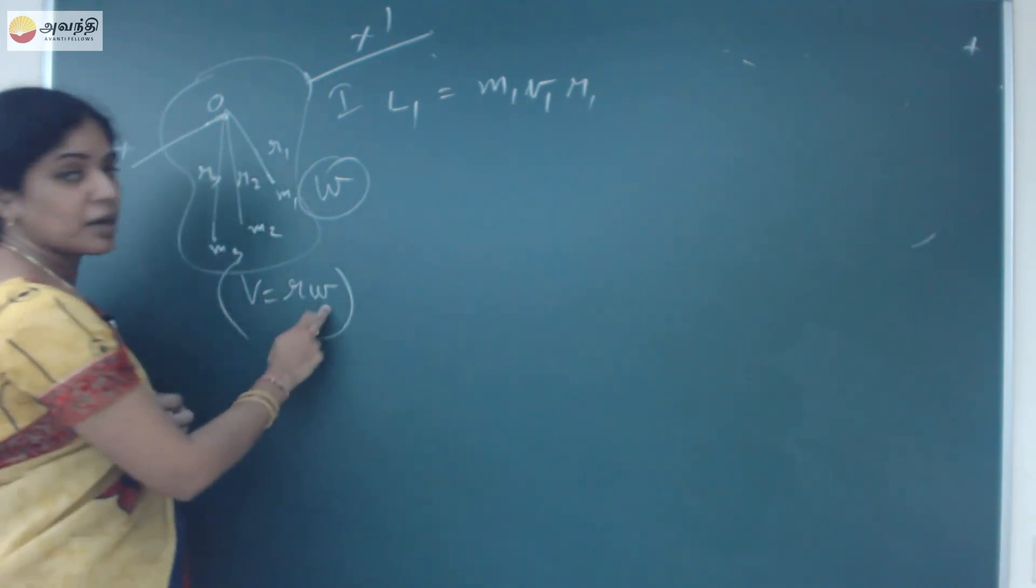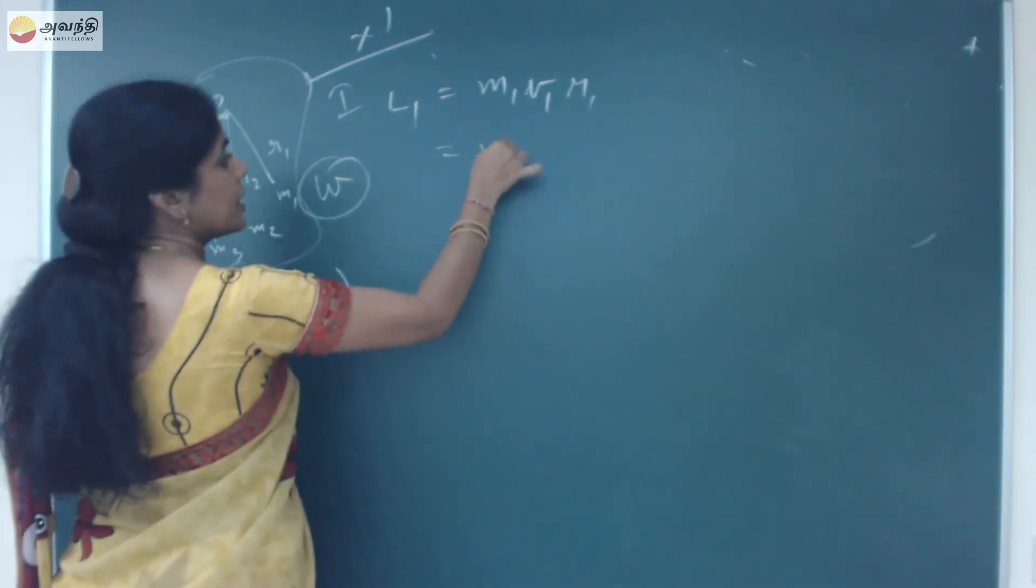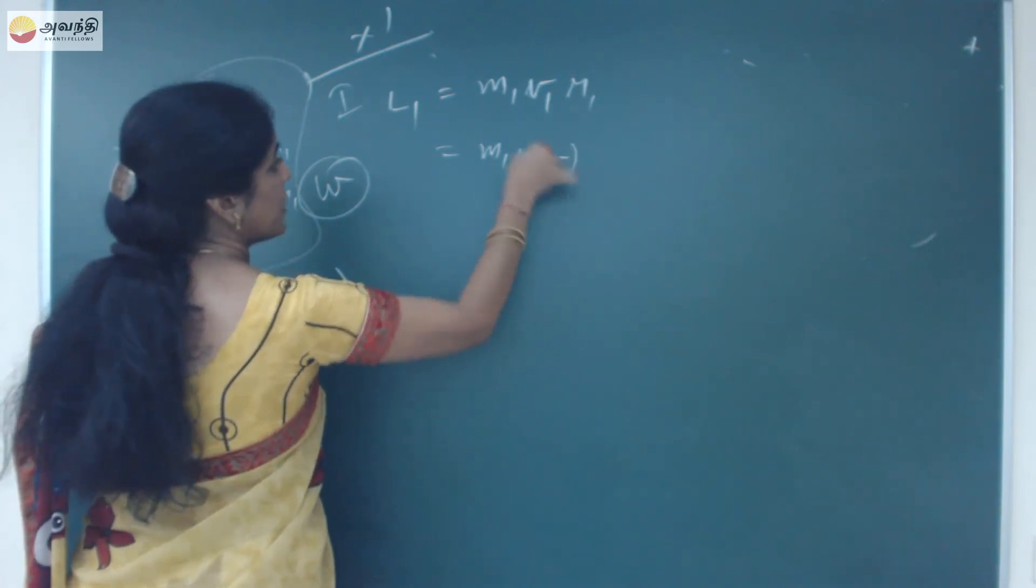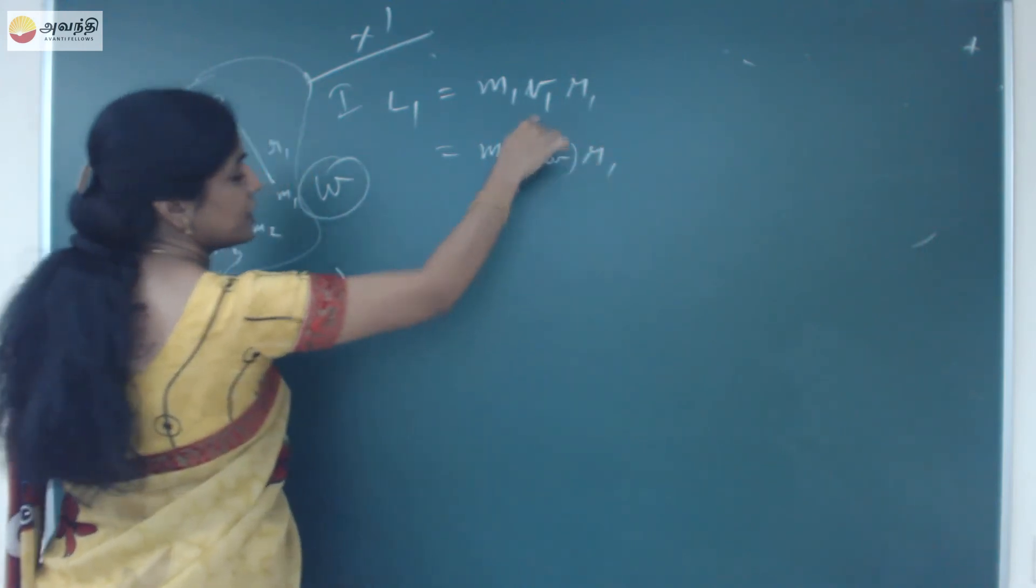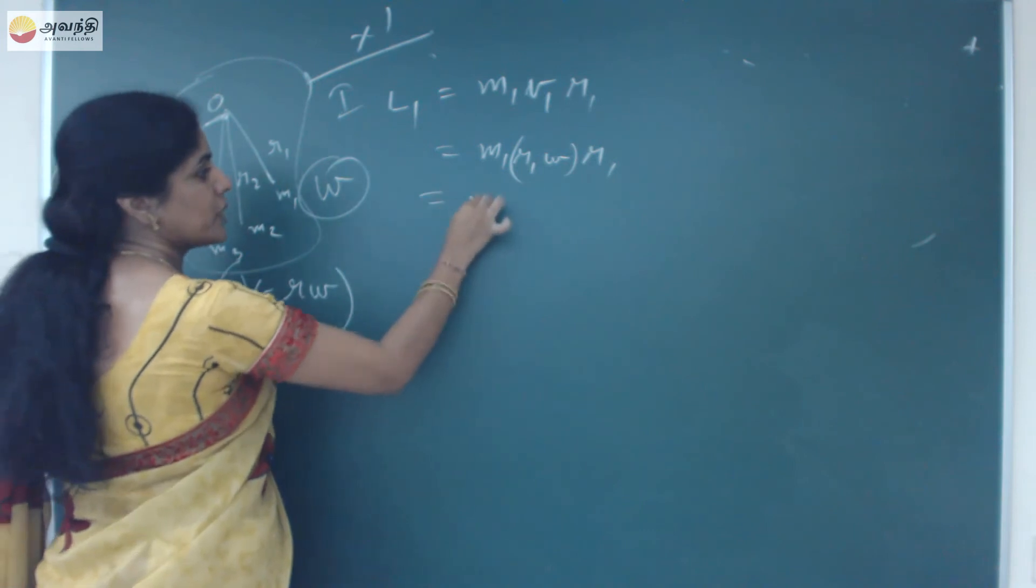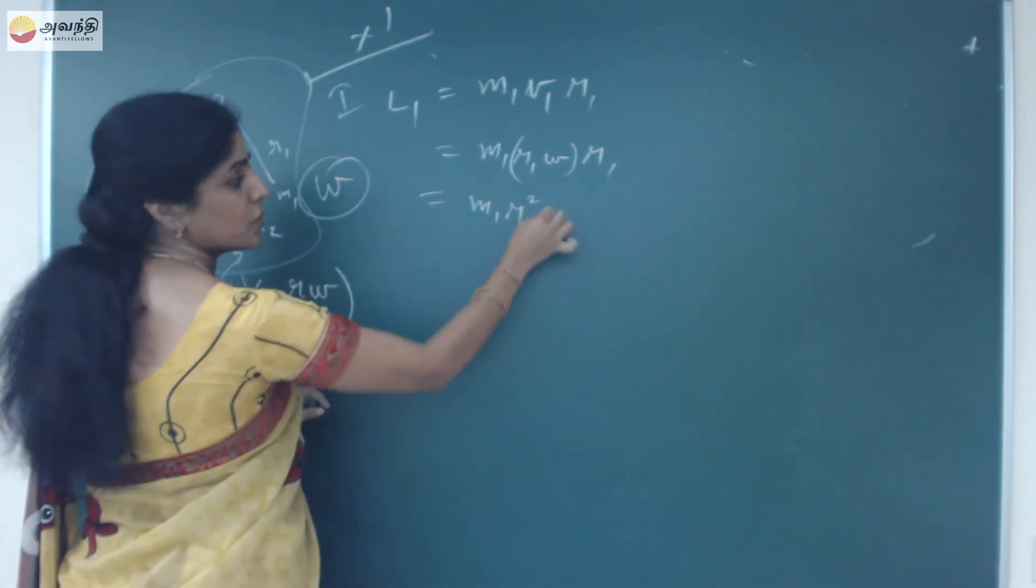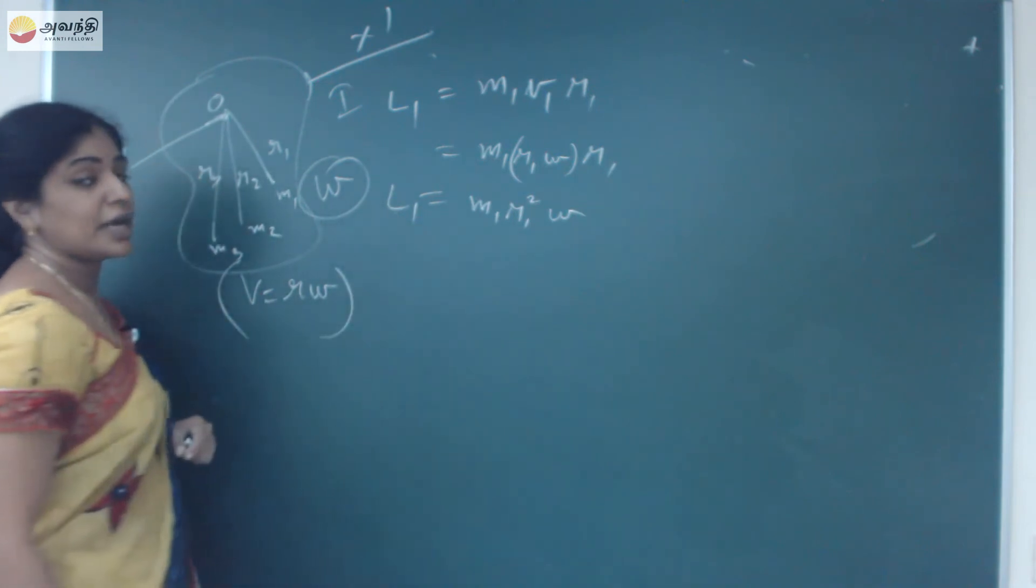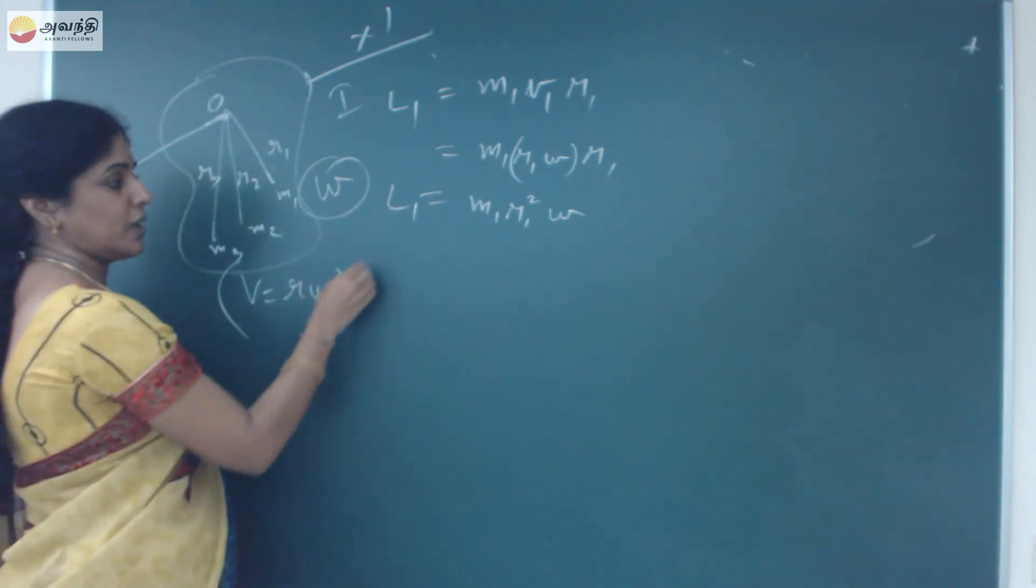So in the V, put R omega. Let's write M1, R1, omega into R1. V1 is R1 omega. So M1, R1 square, omega. So angular momentum of the first particle is L1.